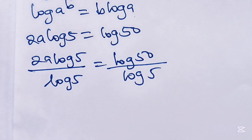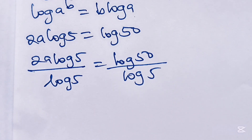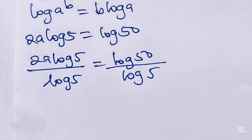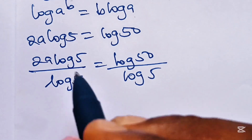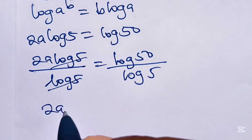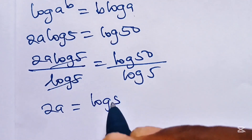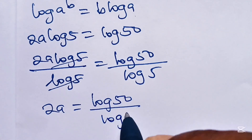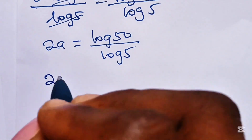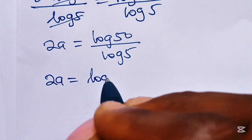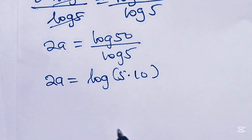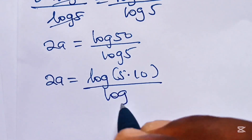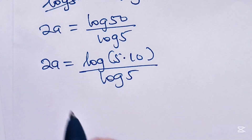To get the value of a is actually easy. The most interesting aspect of this video is where we prove that the answer is correct, so watch to the end. We divide to get 2a equal to log 50 divided by log 5. Now log 50 can be expressed as log of 5 multiplied by 10, divided by log 5.